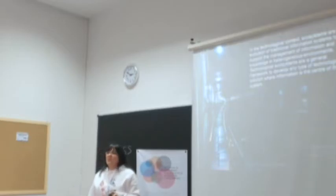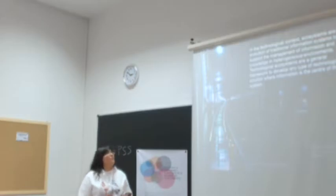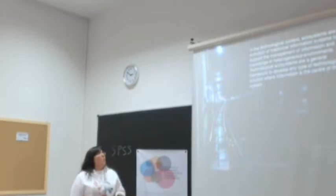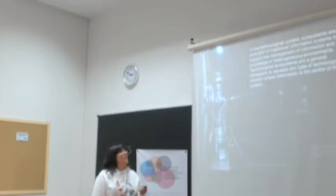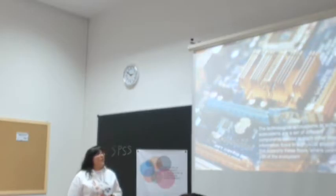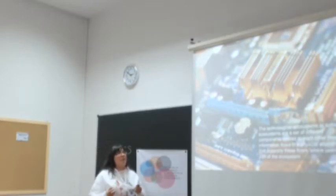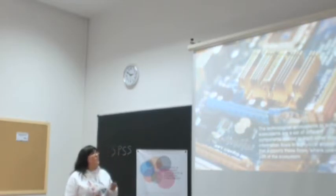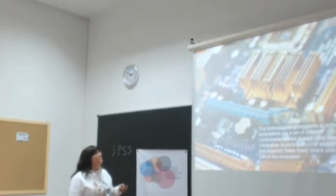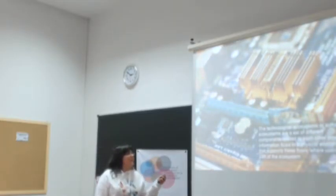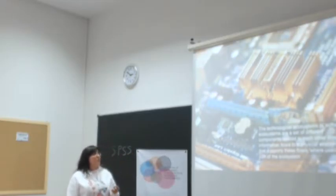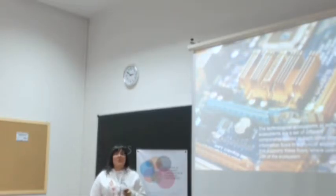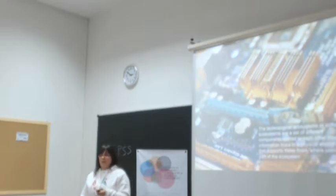Technological ecosystems are a general framework to develop any type of technological solution where information is the center of the system. We can differentiate different kinds of elements in a technological ecosystem — or software ecosystem, depending on the literature — as different components related to each other through information flows, in a physical environment that supports these flows, where users are part of the ecosystem.